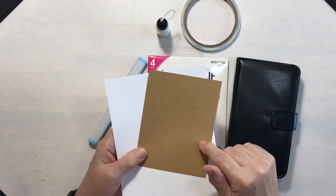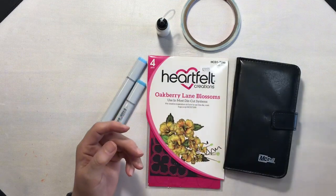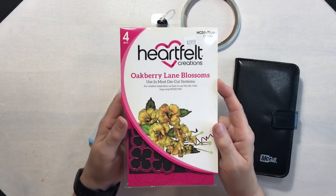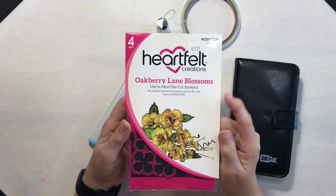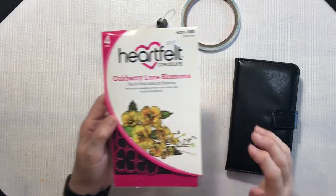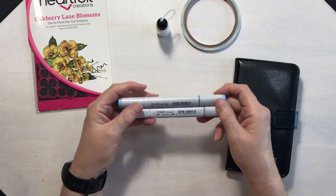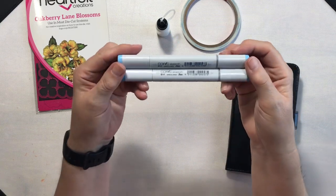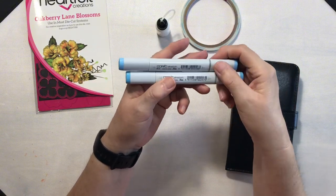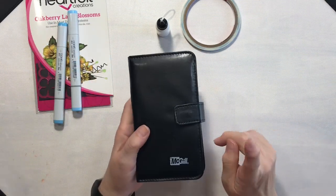I have a 65 pound cardstock craft that I will be using for the card mat. For the flowers I will be using my Heartfelt Creations Oakberry Lane Blossoms die set. This also came with a stamp set but I won't be using that for today's project. I will be coloring my flowers with Copic markers, using B12 and B14 - a light and a medium light blue.